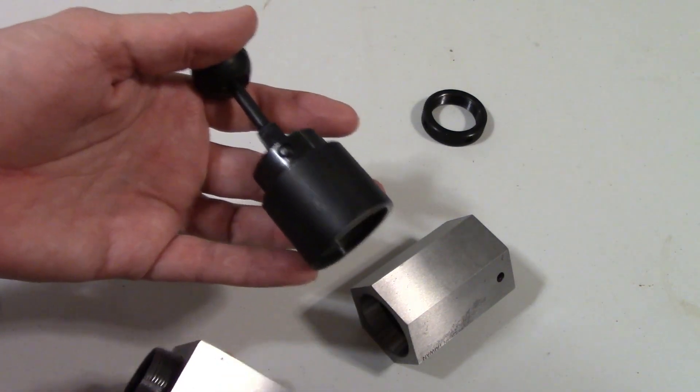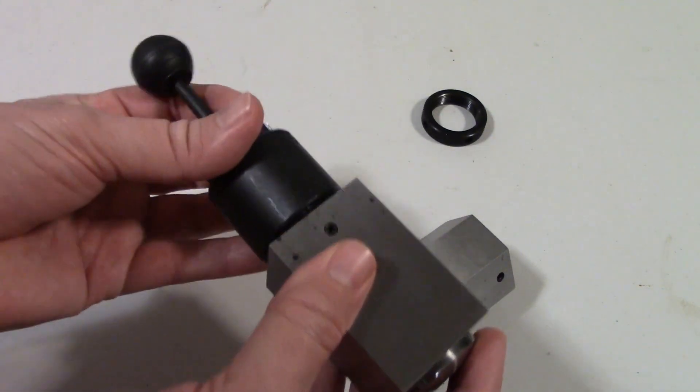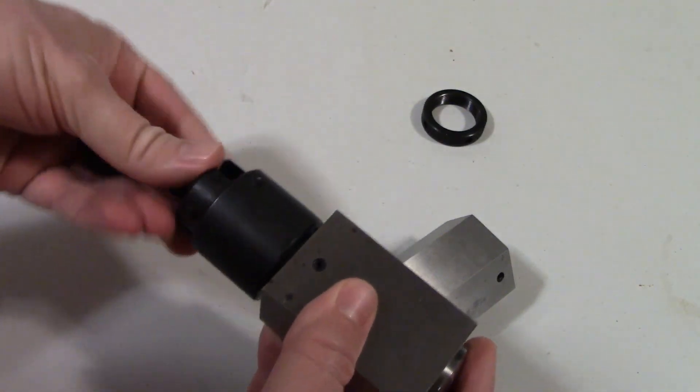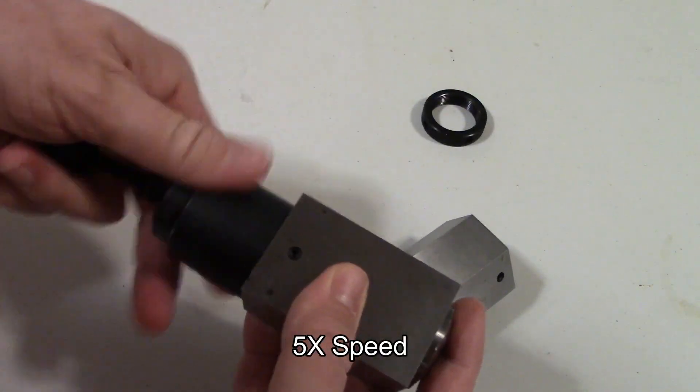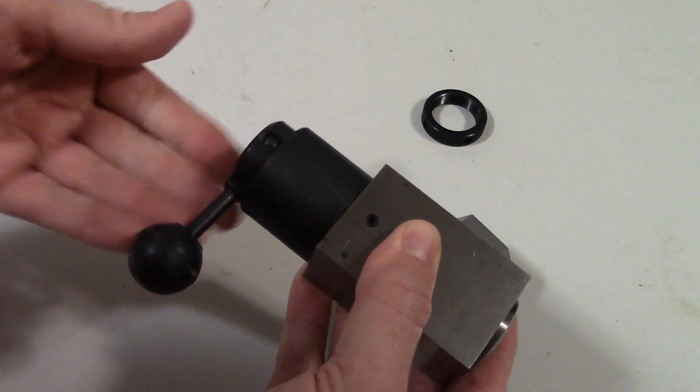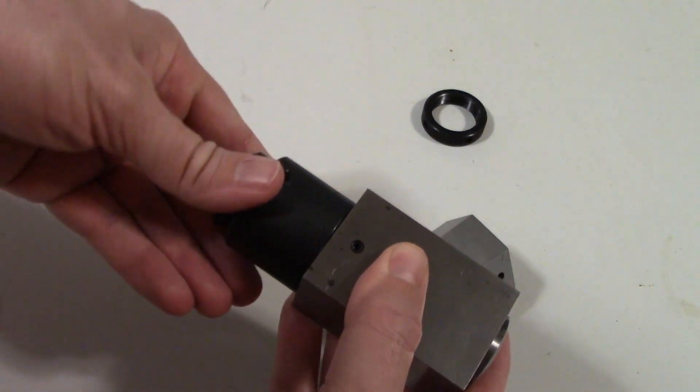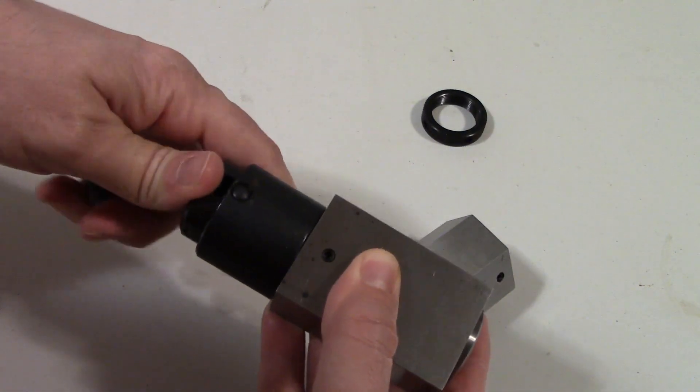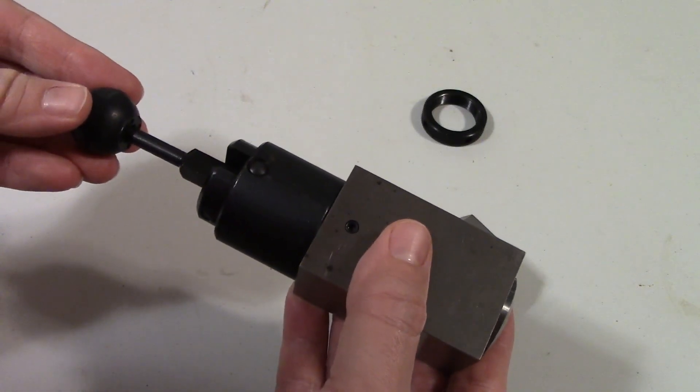When using the cam, put the lever in the tightened position and thread it onto the collet until it starts to get tight on the part. Then switch it to the loosened position and give it a quarter turn more and re-tighten the lever. This is usually enough to get a good grip on the part.